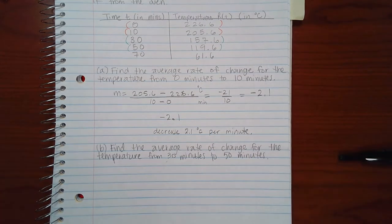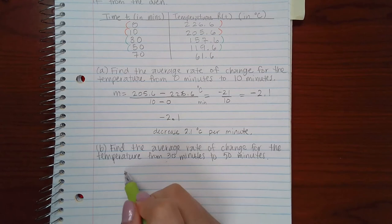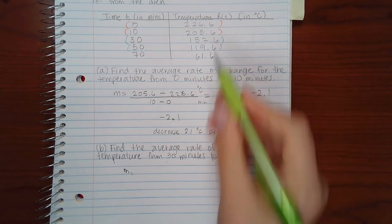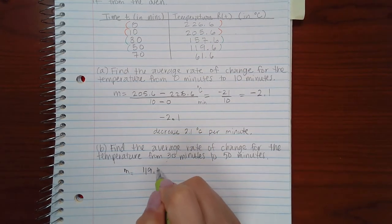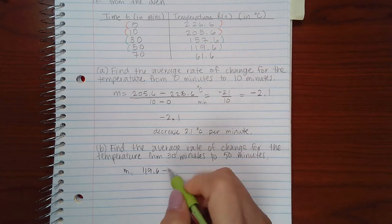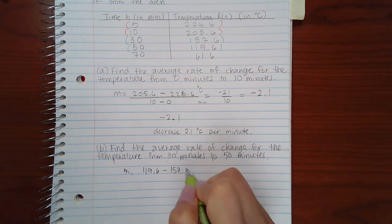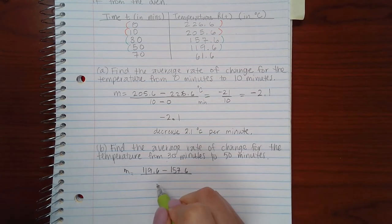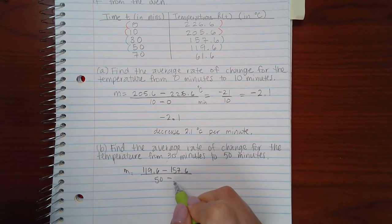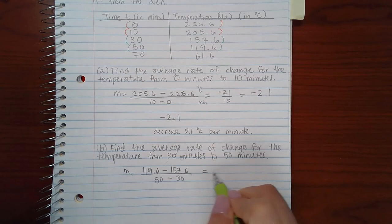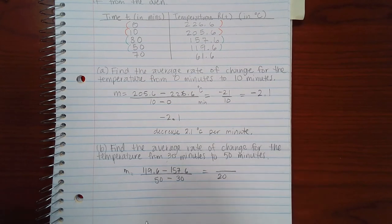So I'm going to find the slope: the second Y value minus the first Y value over the second X value minus the first X value. In the denominator I get 20, and in the numerator I get negative 38.